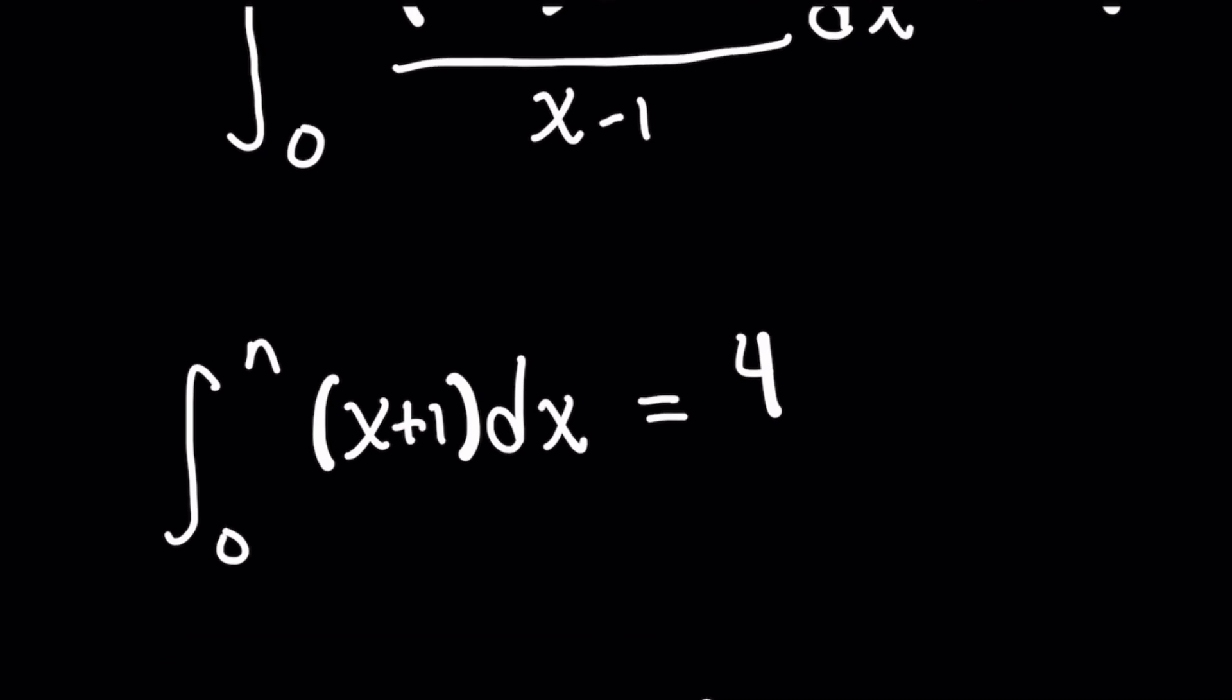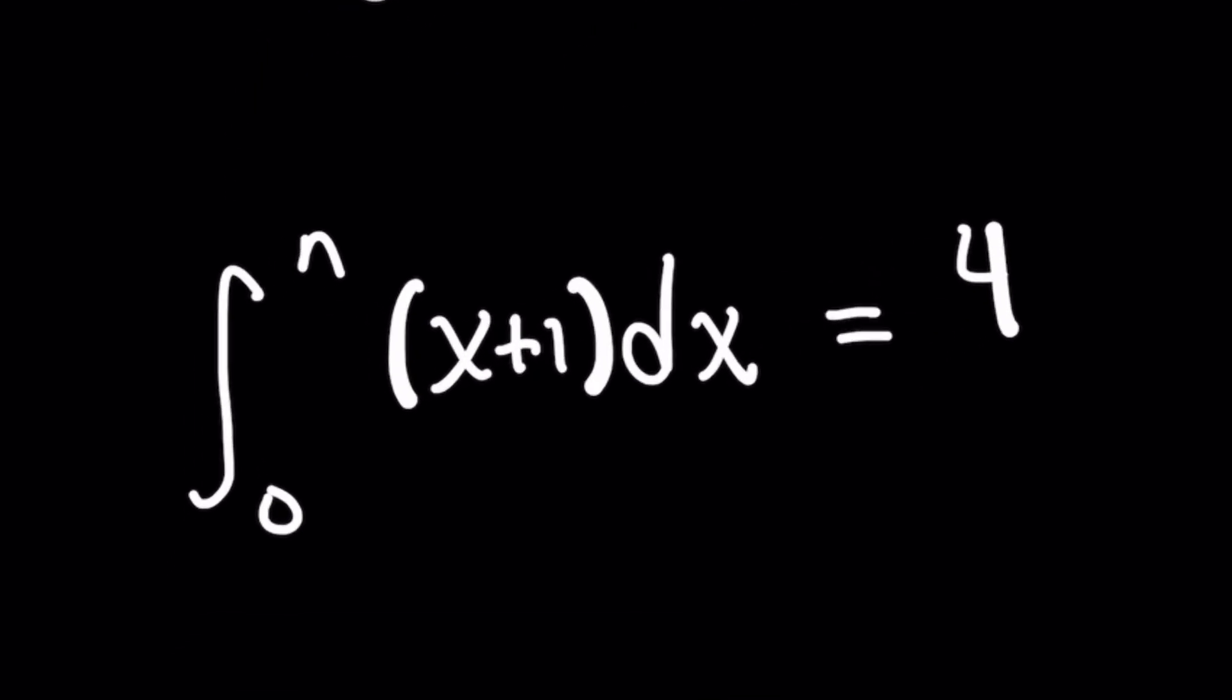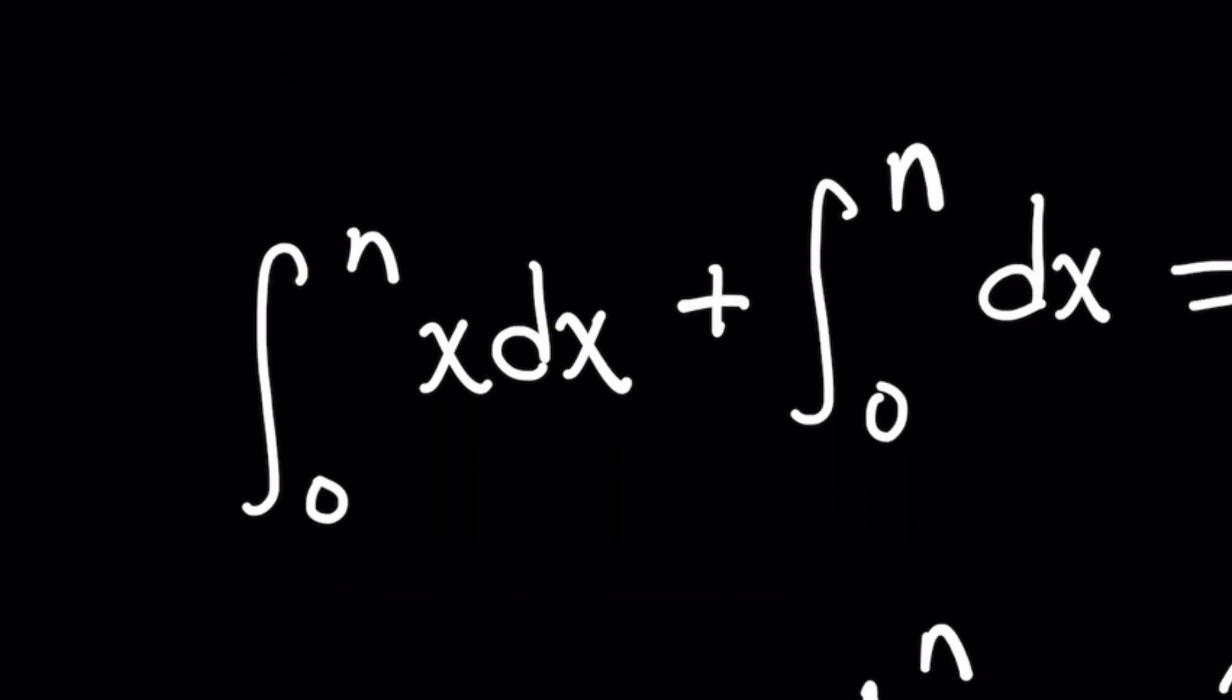And this reduces the integral to a very simple integration of x plus 1 dx. And we can use another nifty rule here because if you remember, the integral of a sum of terms is the same thing as separately breaking those terms up, finding their individual integrals, and adding them together. And so I'm going to do that here.